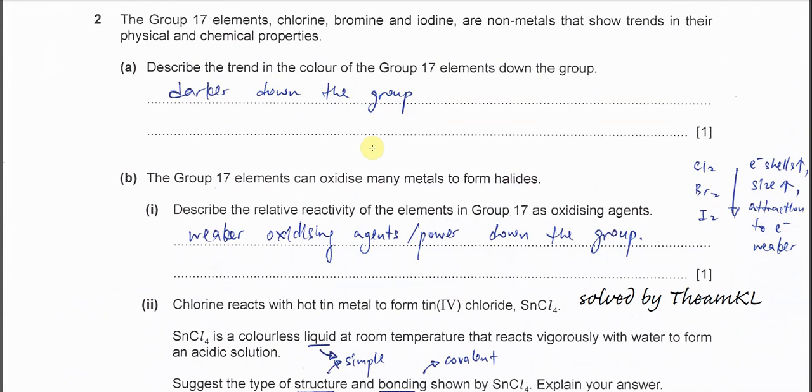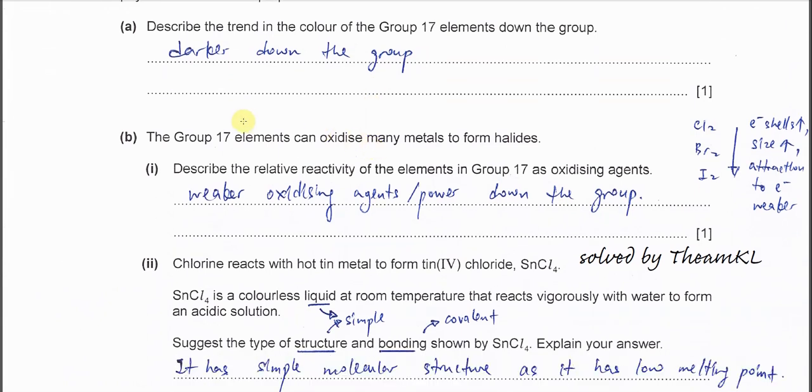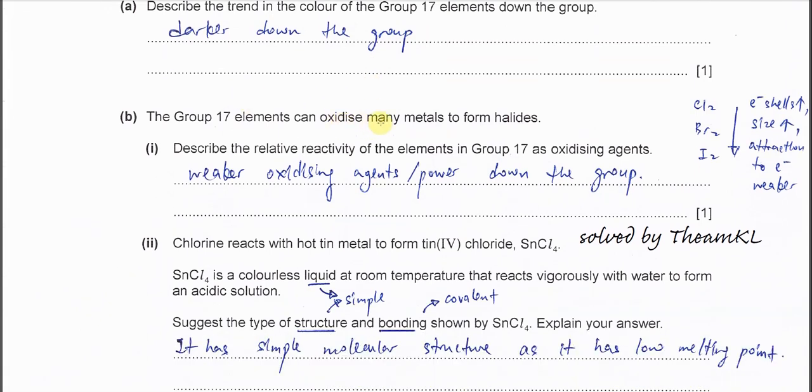Part B. The Group 17 elements can oxidize many metals to form halides. Describe the relative reactivities of the elements in Group 17 as oxidizing agents. First you need to know what oxidizing agent means. It means it's able to oxidize other species, so it's going to get electrons from other species.